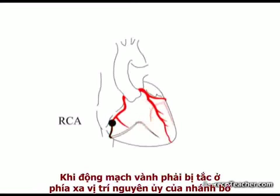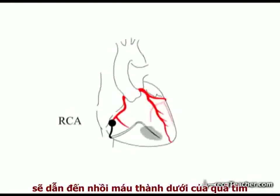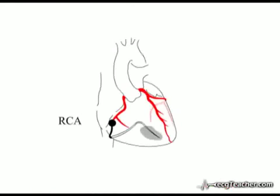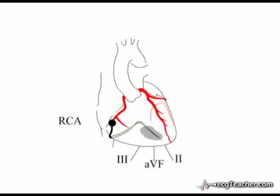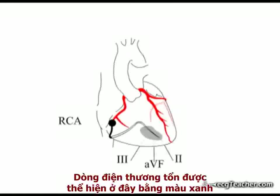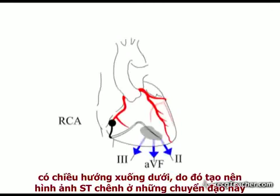Blockage of the RCA distal to the origin of the marginal branch infarcts the inferior surface of the heart. This inferior surface is examined by leads 2, 3, and AVF. In inferior infarction, the injury current, represented here by the blue arrows, therefore produces ST elevation in these leads.